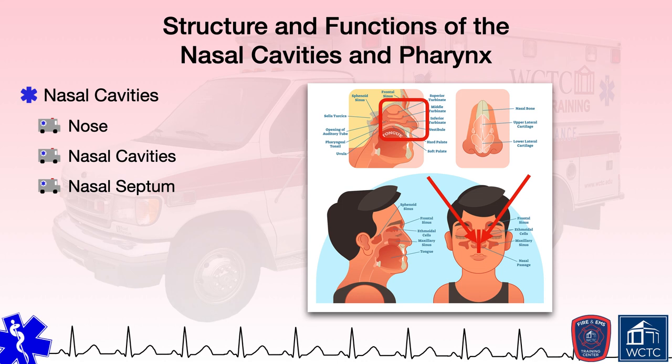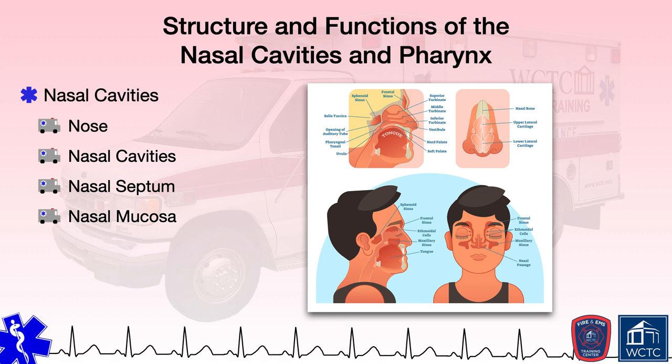If someone has a deviated septum, that means the septum does not sit midline, which could be a consideration when inserting a nasal airway. The interior of the nasal cavities are lined with ciliated mucous membranes that serve to remove contaminants from inhaled air. If someone were to have a cold, for example, the nasal mucosa will increase production of mucus to hopefully trap any additional infectious agents within the inhaled air. These mucous membranes can be easily injured by foreign bodies introduced into the nasal cavity and tend to bleed considerably given a very rich blood supply.